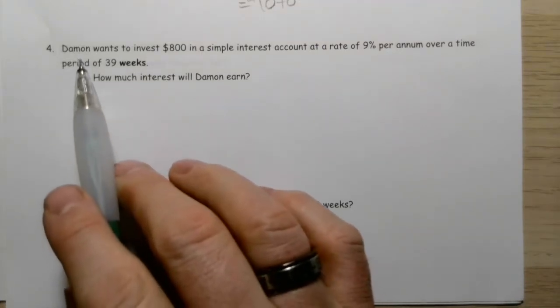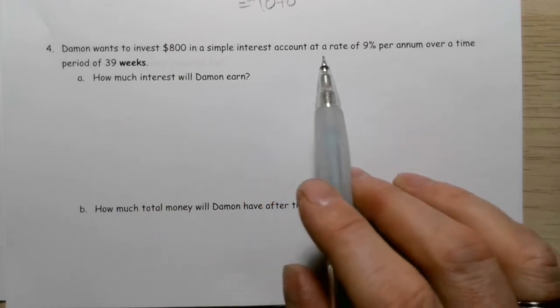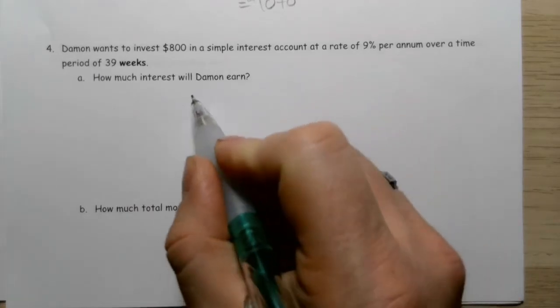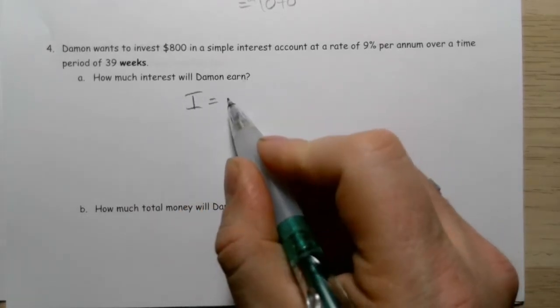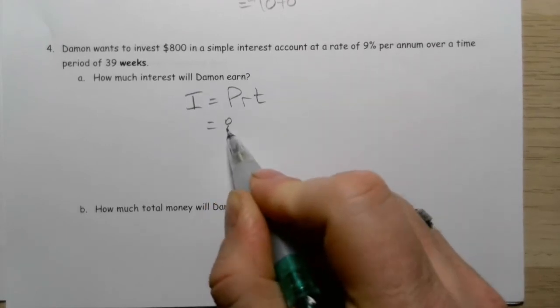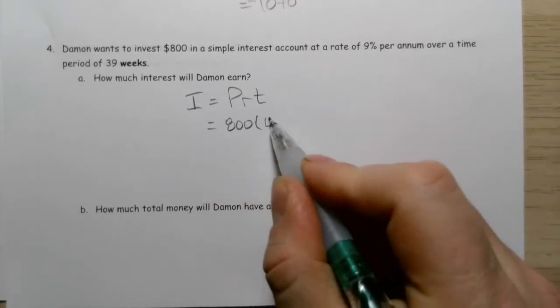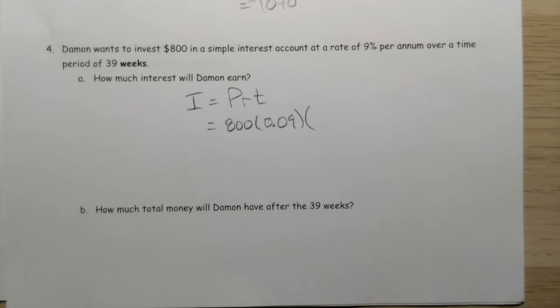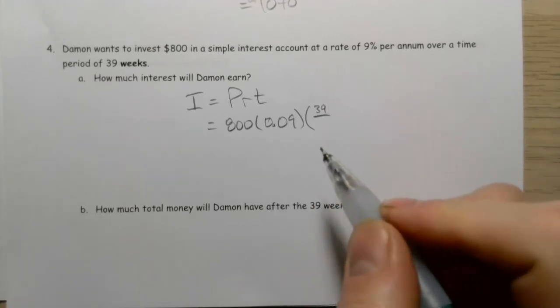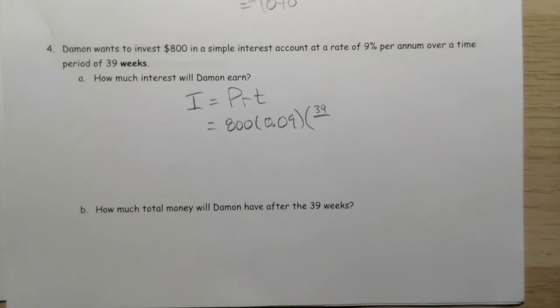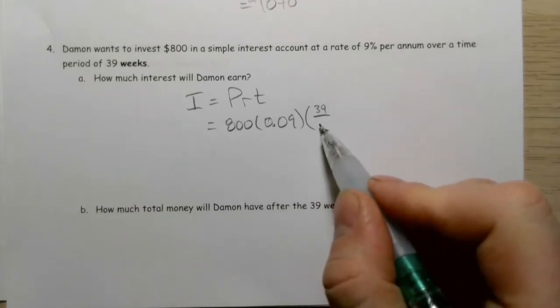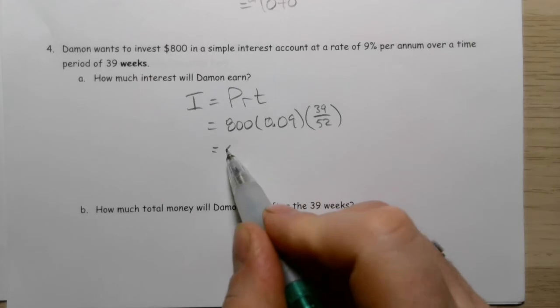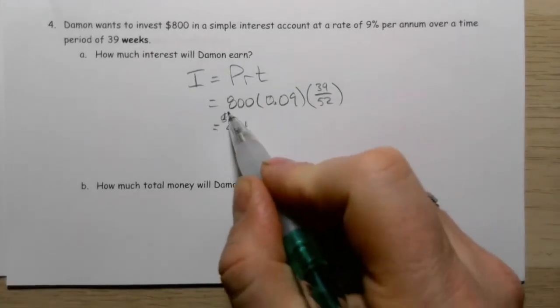Damon wants to invest $800 in a simple interest account at a rate of 9% per annum over 39 weeks. Again, we're playing with that timeframe. Our principal is $800, multiplied by rate, 0.09. It helps to know there are 52 weeks in a year. So I want to convert 39 weeks into a fraction of a year: 39 over 52. If you multiply that out, you get $54 in interest.